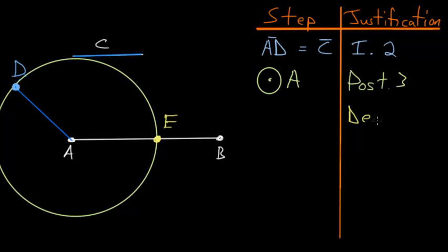Using Definition number 15 of Euclid's 23 definitions, we know that within a circle, the radii of the circle are equal to each other. So this line AD here must equal this line AE since they are both radii of the circle. So line AD equals line AE.